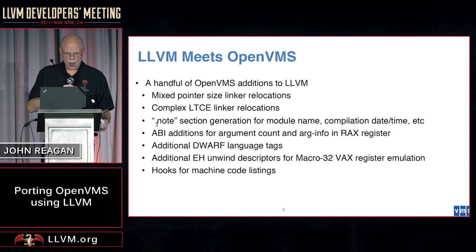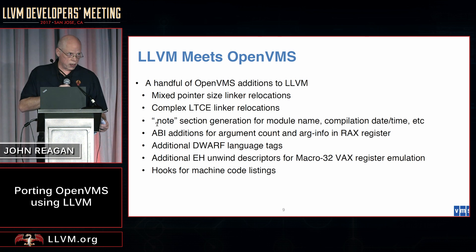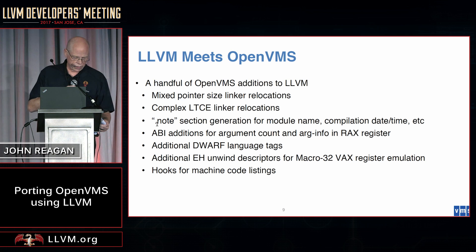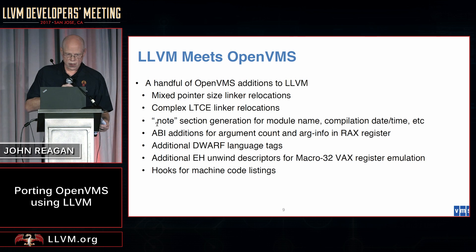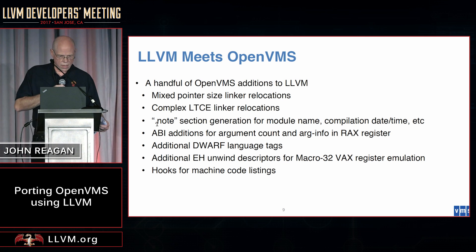Some of the things we've had to change for LLVM: VMS is a mixed pointer size operating system — we have both 32 and 64-bit pointers and you can mix and match in the same program, even the same routine. That has exposed some deficiencies in static pointer initialization. There are some ELF additions we've had to make for link-time expressions involving two relocatable symbols, some changes to the ABI for arg count and arg info, and yet another Macro32 compiler, this time using memory vectors for pseudo registers.